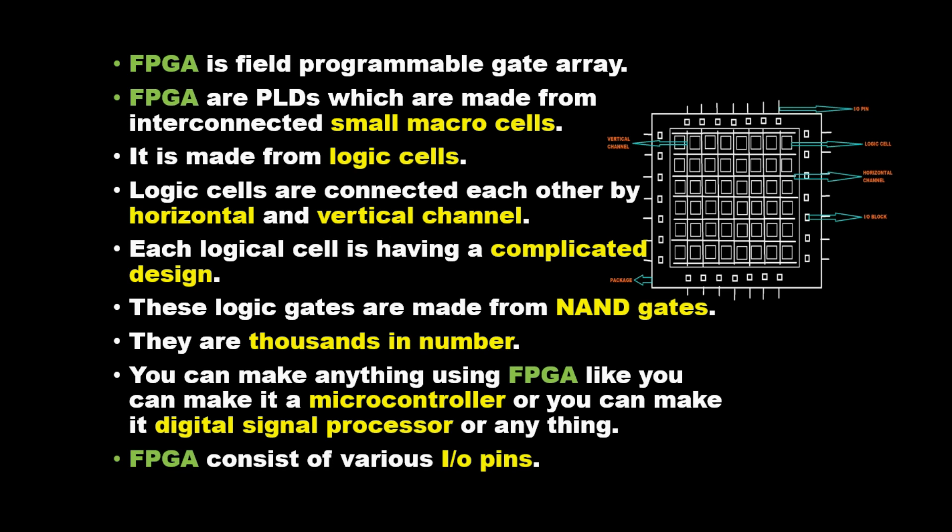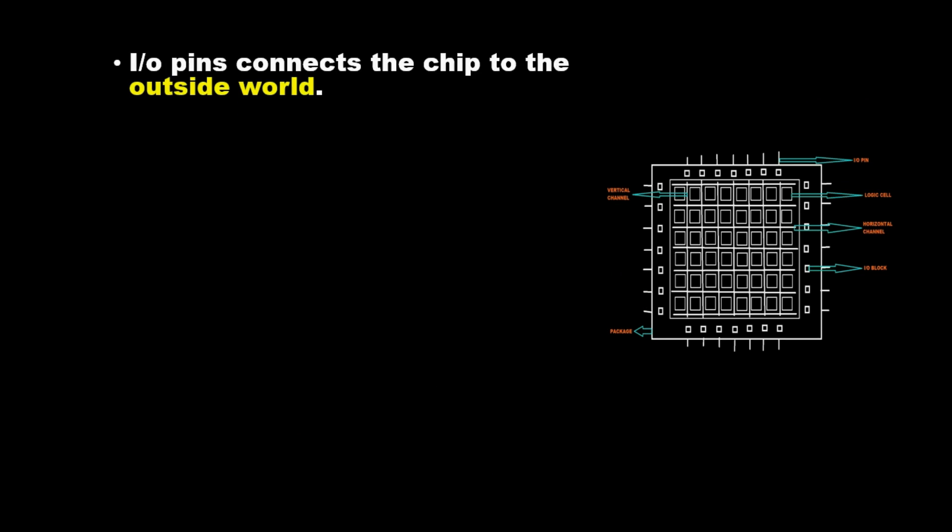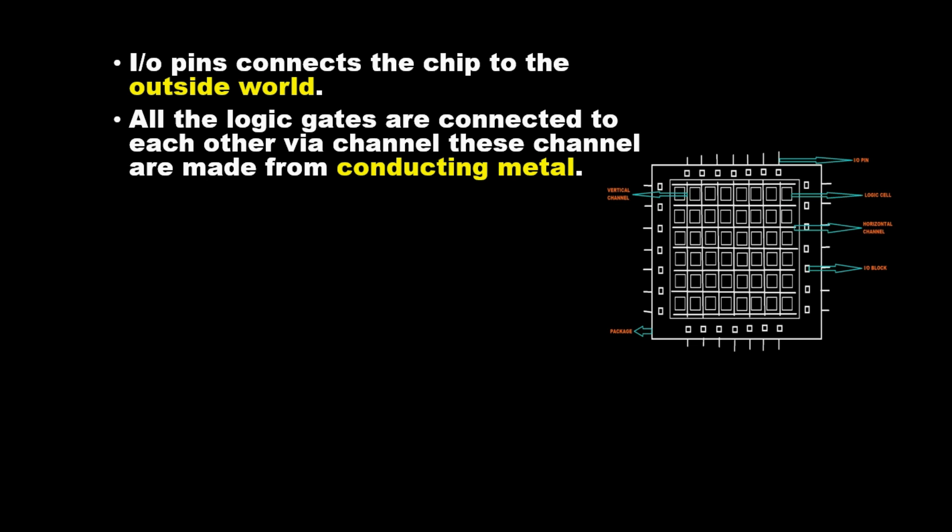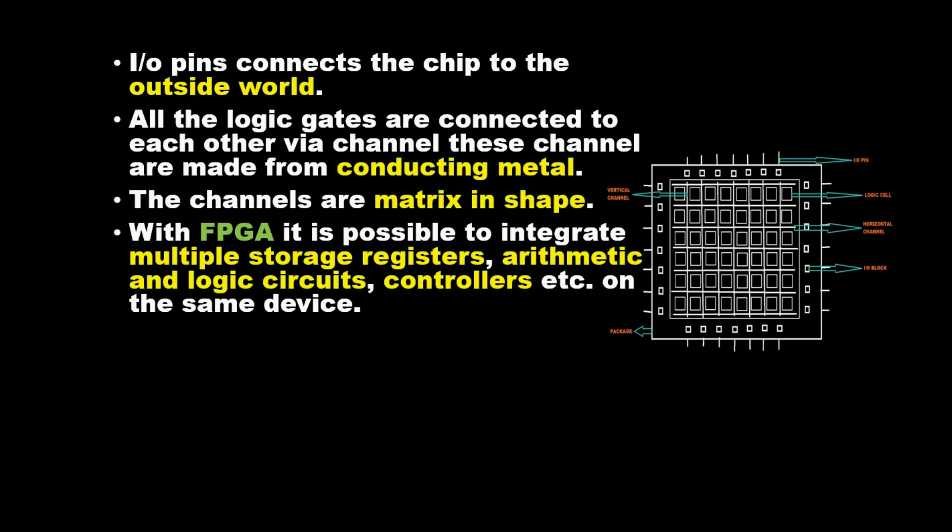FPGAs consist of various I/O pins that connect the chip to the outside world. All the logic gates are connected to each other via channels made from conducting metal. The channels are matrix in shape. With FPGAs, it is possible to integrate multiple storage registers, arithmetic and logic circuits, and controllers on the same device.